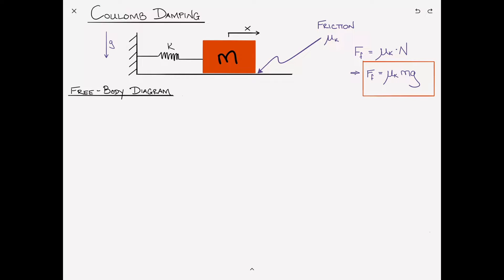We proceed by looking at the free body diagram, and in this case we need to consider two different cases. When the block is moving to the right, the velocity X dot is greater than zero. We have a spring force KX in the opposite direction, and the frictional force, which always opposes motion, is to the left.